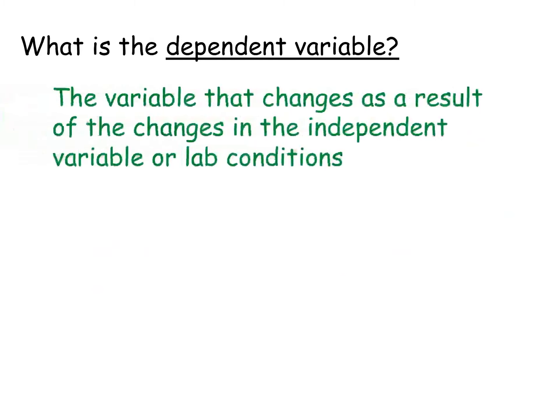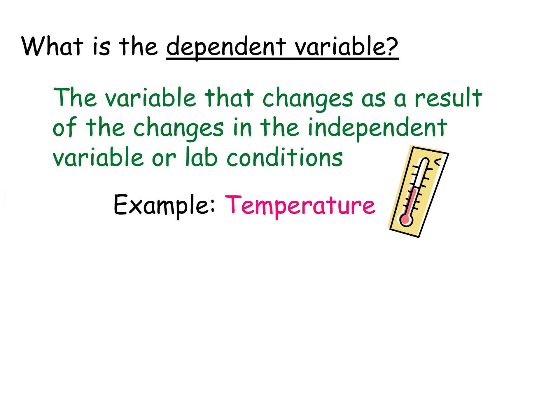Dependent is going to be changing as a result of the changes in the independent variable or lab conditions. So this could be a whole bunch of stuff. A classic example is temperature. You could also have things like mass, volume, or a whole bunch of other stuff.